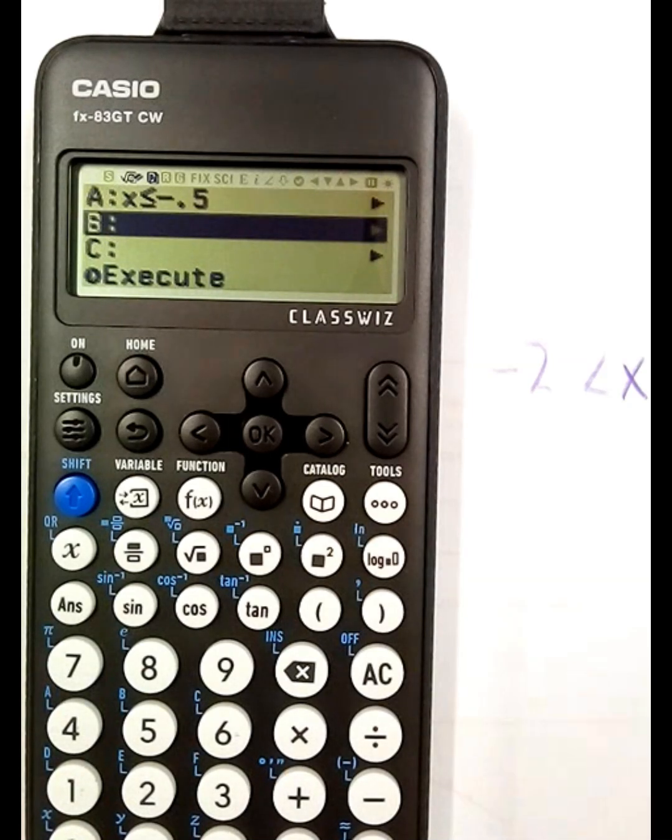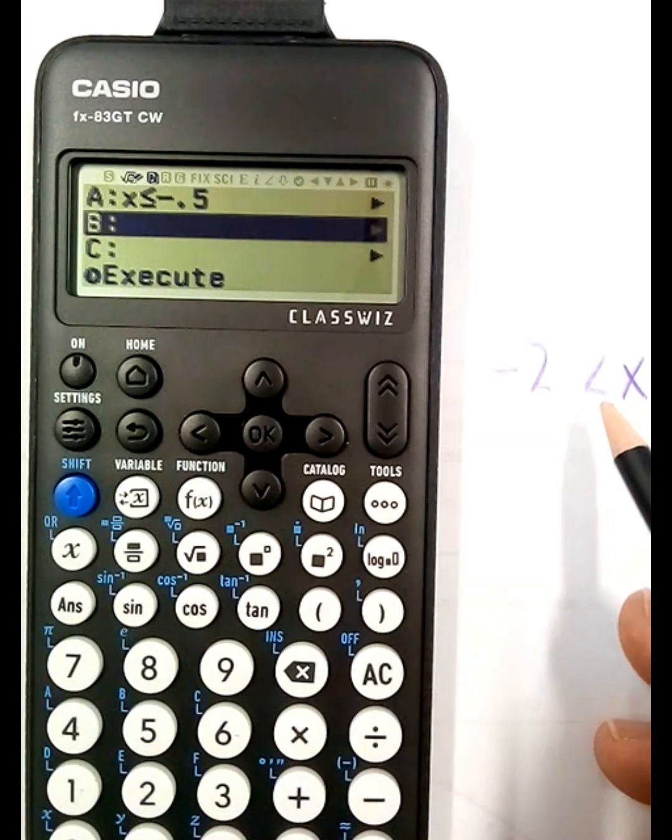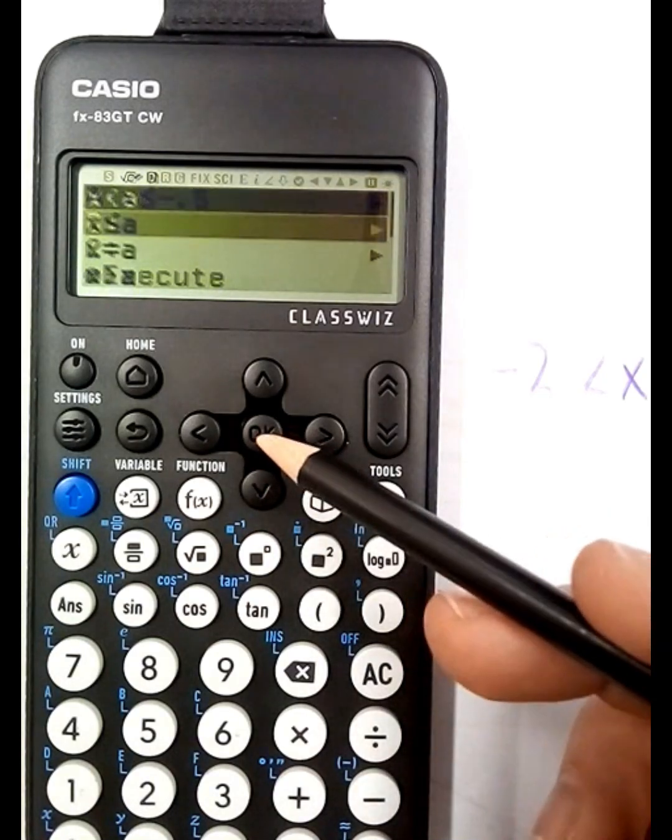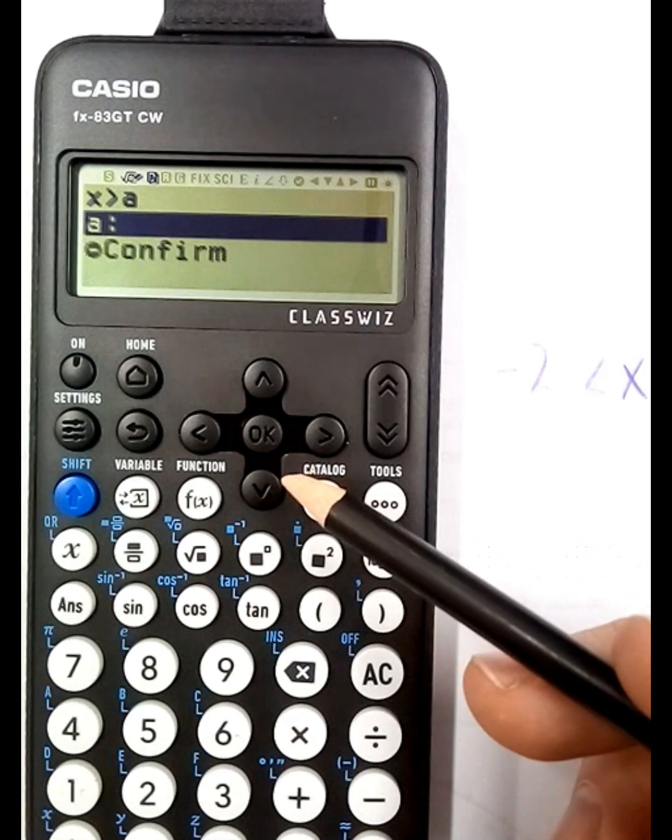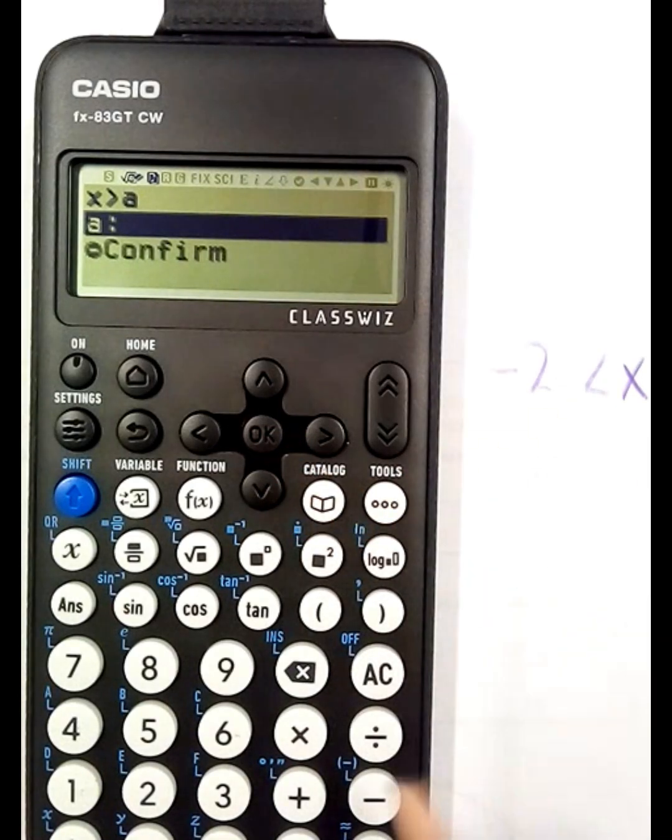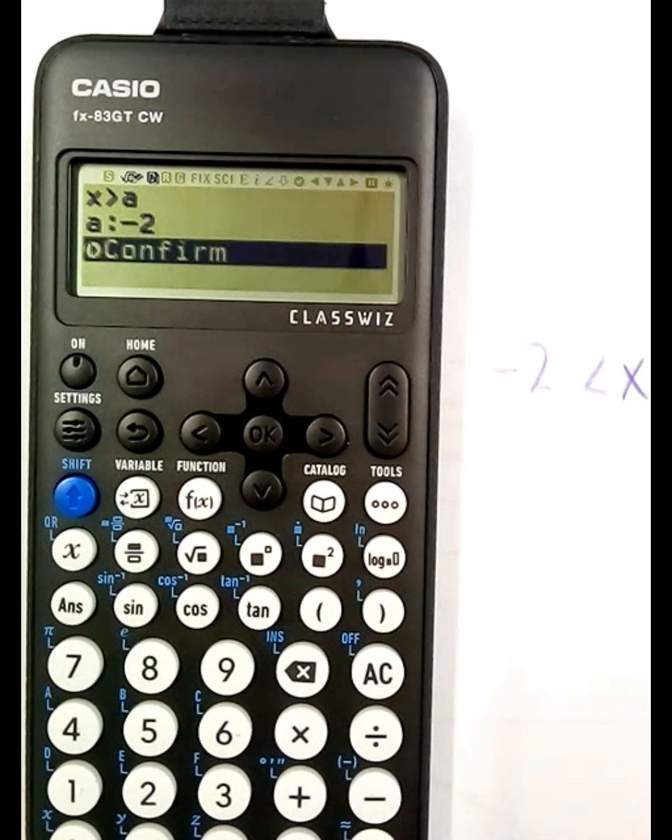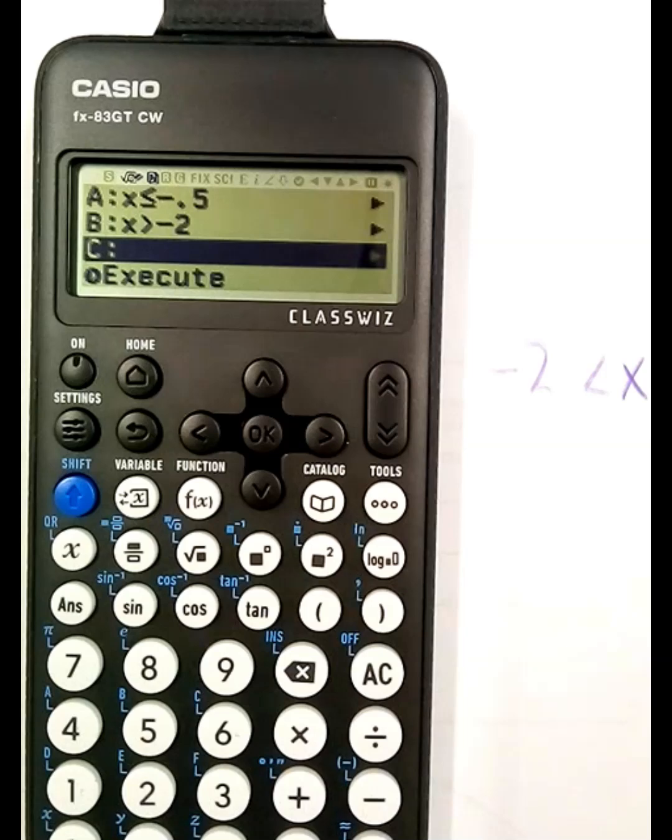Now I need the b option which is obviously going to be at the lower end, and as I see at my lower end x is greater than. So I'm going to press it, x is greater than, and I'm going to put in minus 2. C then is going to be left blank, we can leave this one blank, and execute.